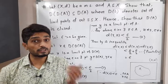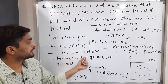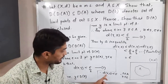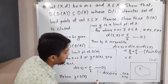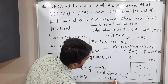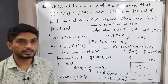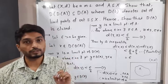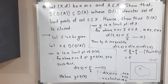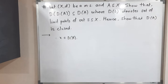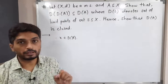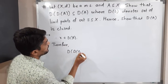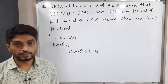Now, by the same definition of limit point, since d(X, Z) is less than epsilon with Z belonging to A and X not equal to Z, this means X is a limit point of A. Since D(A) denotes the set of all limit points of A, we can write X belongs to D(A). We had taken X from D(D(A)) and finally proved that it is in D(A). Therefore, D(D(A)) is a subset of D(A), and the first part is proved.